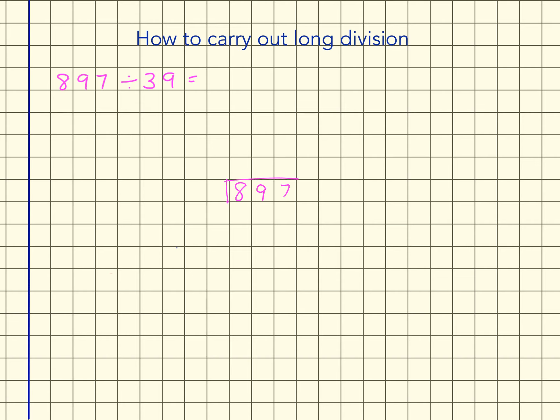897 divided by 39. Now I don't know my 39 times table but what I do know is my 4 times table, so therefore I know my 40 times table.